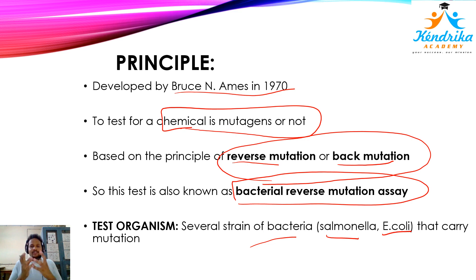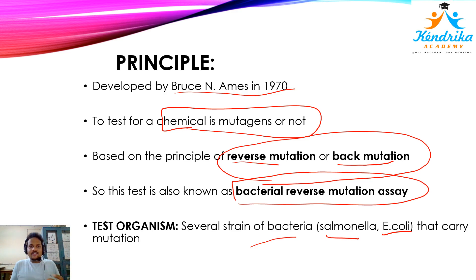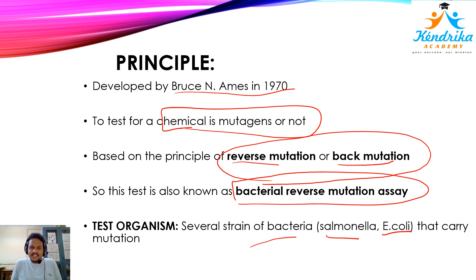As mentioned, reverse mutation can repair a particular mutation. Suppose you have a bacterium that has a mutation in a particular gene. If a reverse mutation occurs, this gene may be repaired — meaning one more mutation is introduced. So you already have a mutant bacteria. You apply your particular chemical that you suspect is a mutagen. If after adding it one more mutation occurs, that reverse mutation may recover the previous mutation, and bacteria that were negative for a particular gene will now become positive.